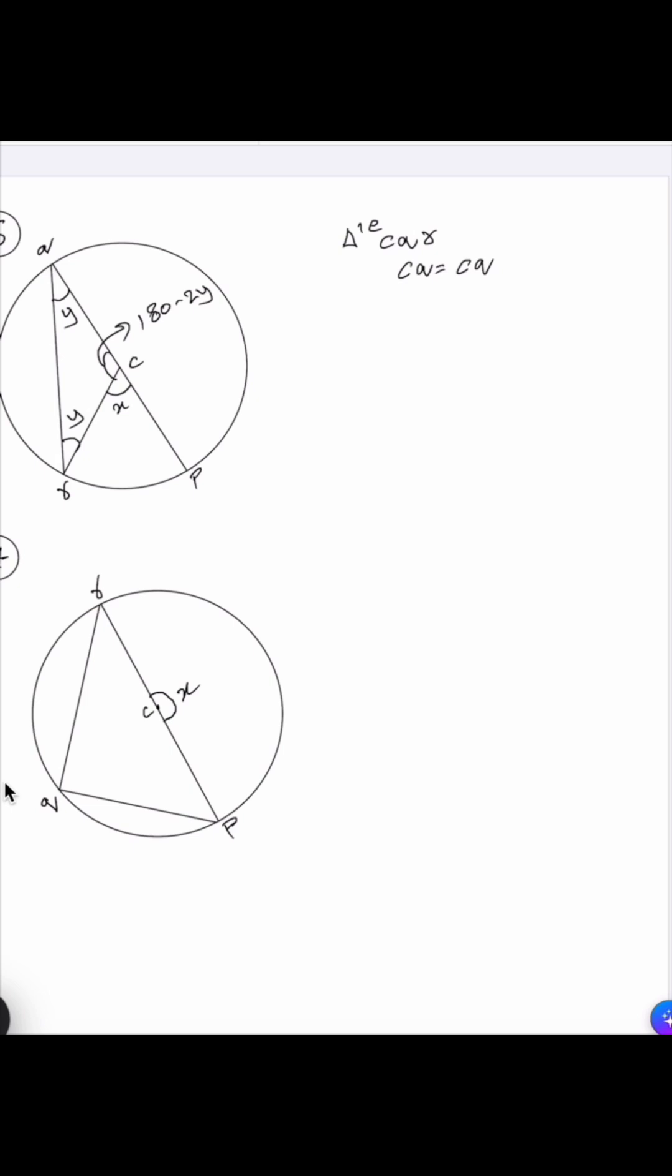As we already know the angle on a straight line is 180 degrees, the total angle at C should be equal to 180 degrees. So 180 minus 2y plus x equals 180 degrees. If we solve this equation, we will get x is equal to twice the value of y.